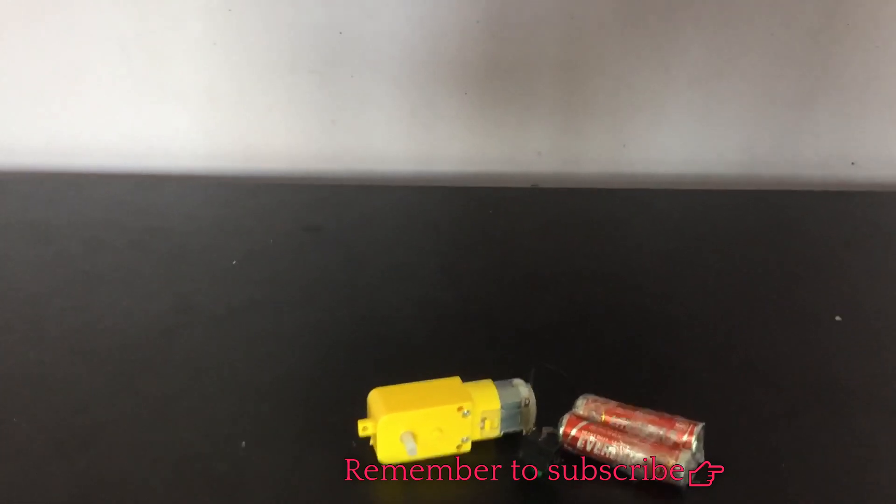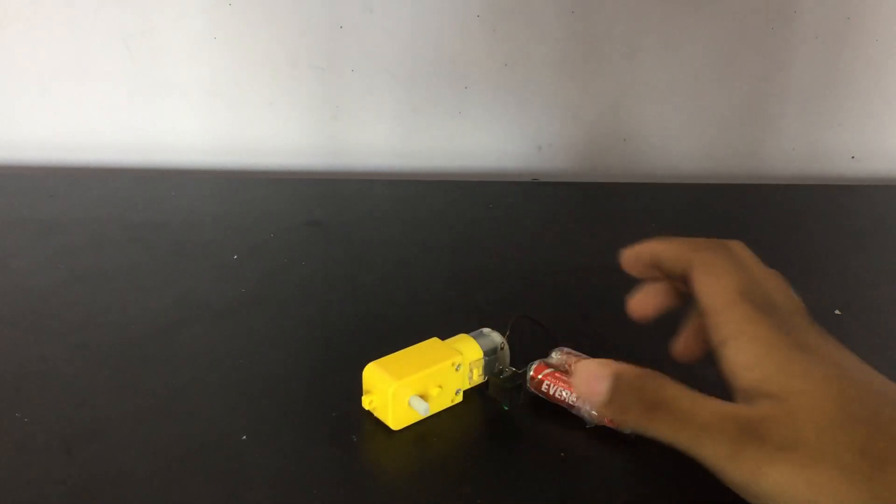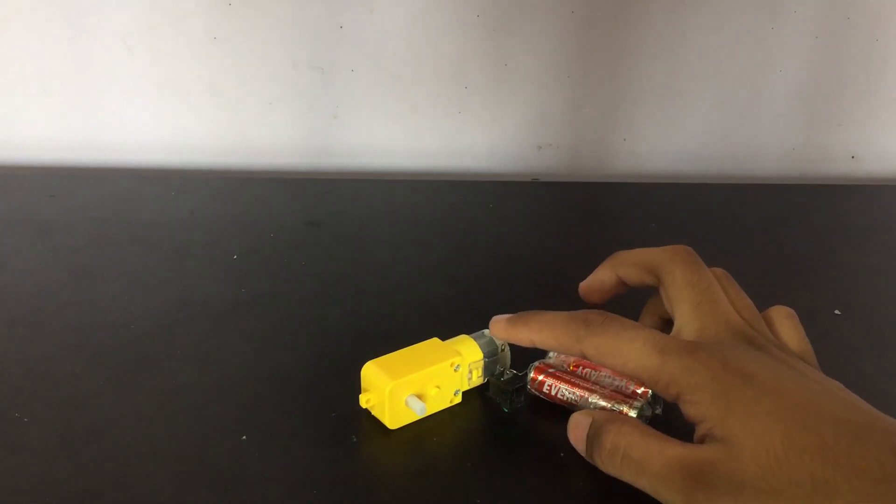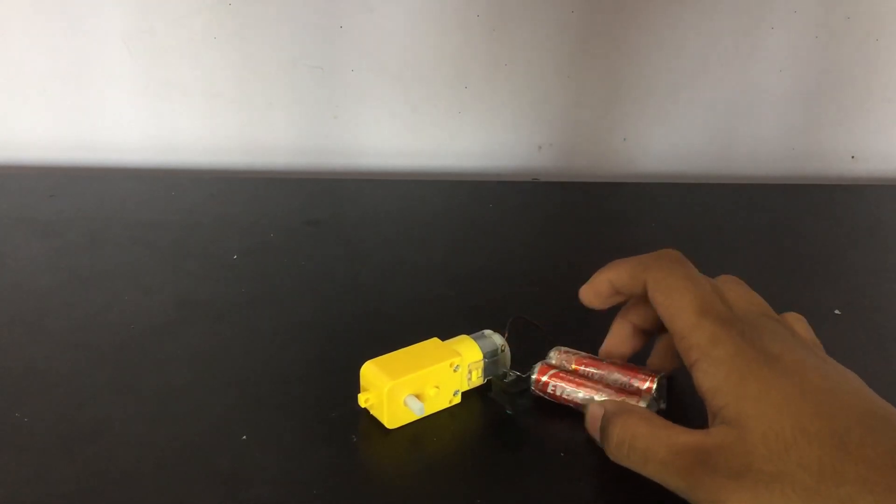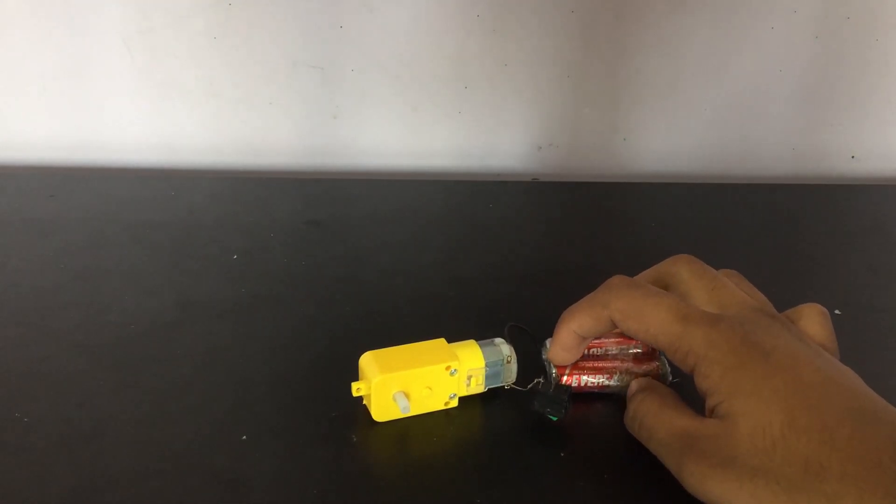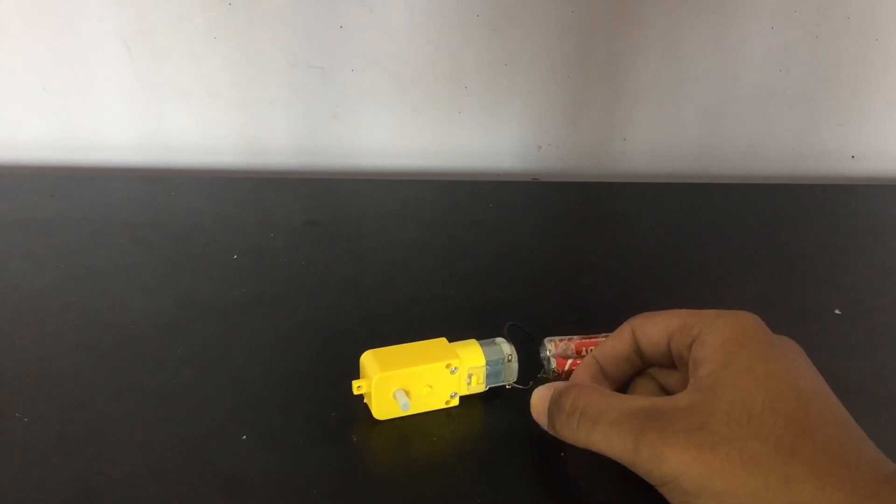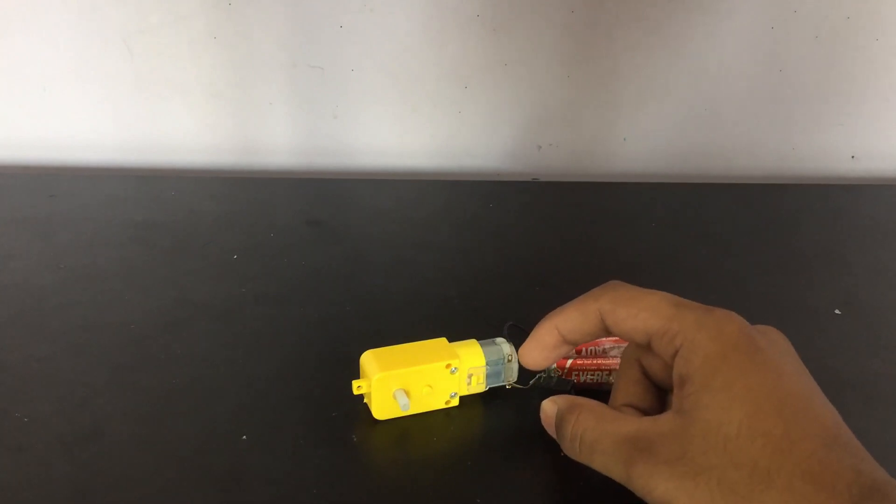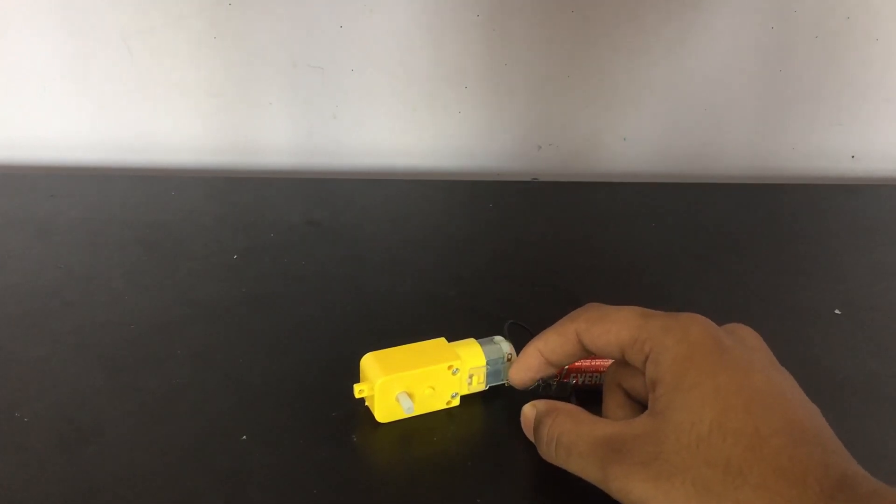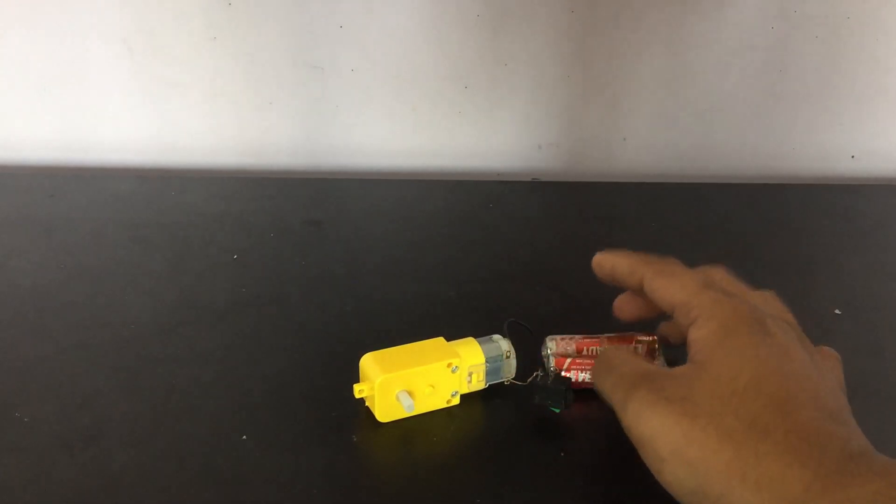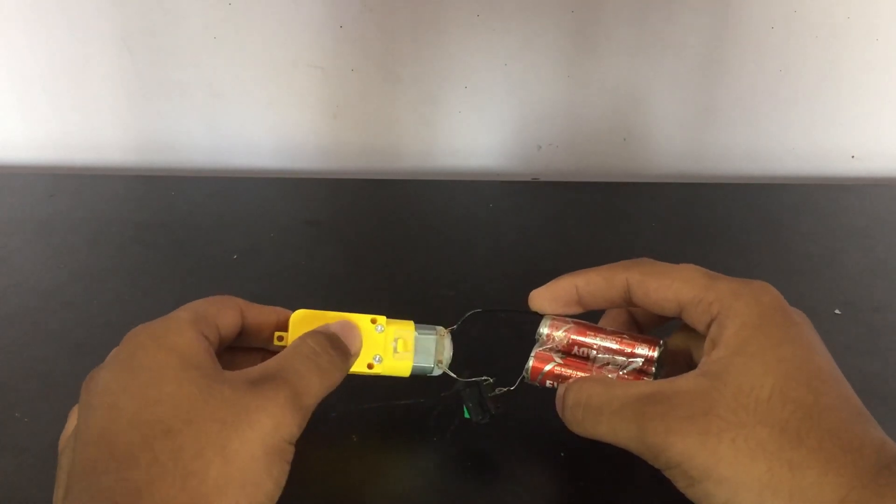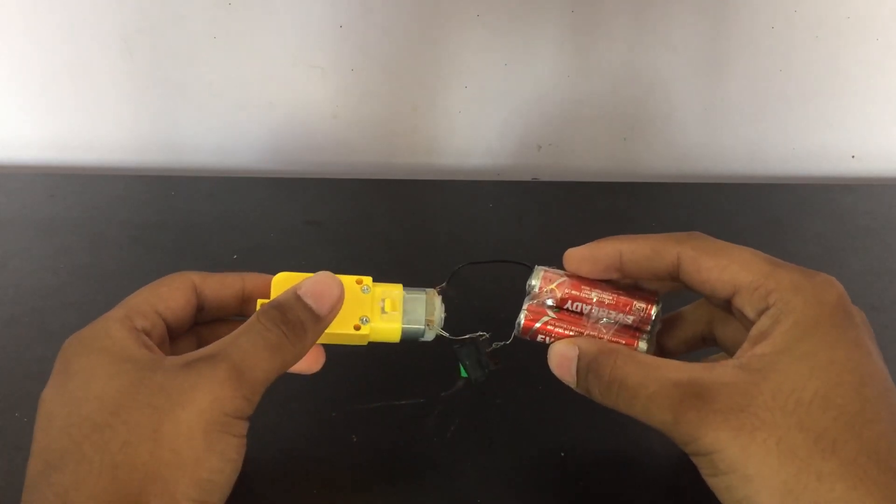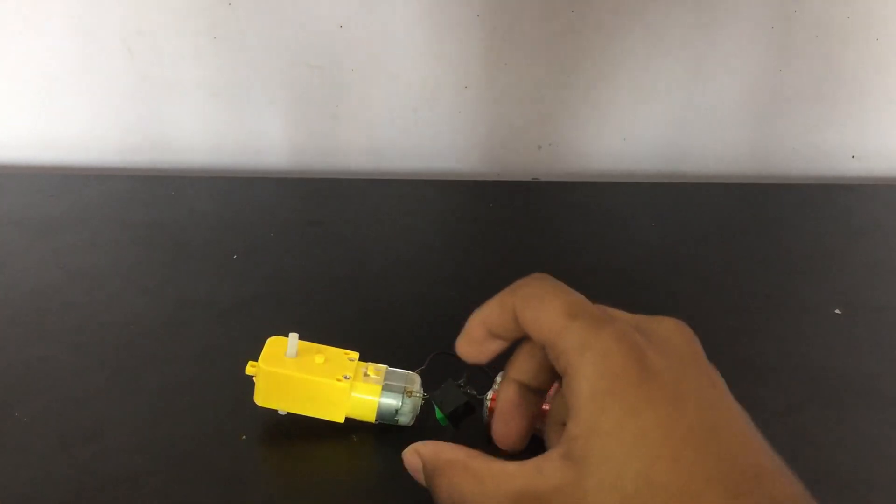So here's how it works. One terminal of the battery goes directly to the motor, then the other terminal of the battery goes to the switch, and then the other terminal of the switch goes to the other terminal of the motor, thus forming like a triangle. So our connections are done and let's test it.